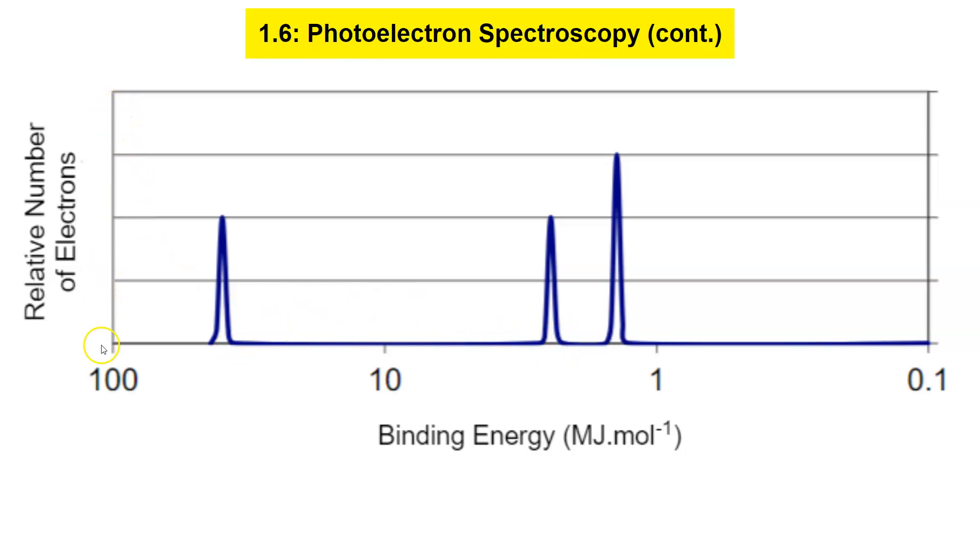And on our y-axis, it says relative number of electrons. Looking at the first and second peaks, you notice it holds two electrons. If you think about it, we know our S block will hold up to two electrons.